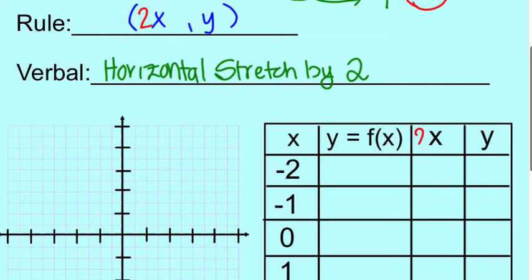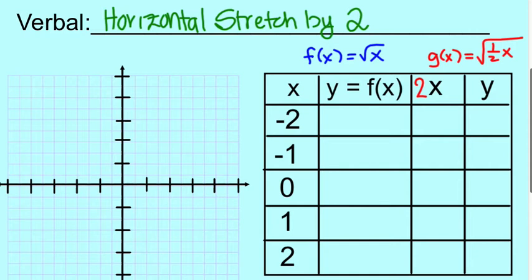So we're going to multiply this by 2. Our g of x function is the square root of 1 half x, f of x equals the square root of x. So let's go ahead and evaluate. The square root of negative 2 doesn't exist.